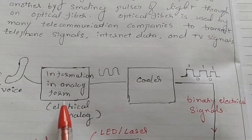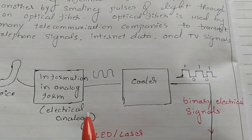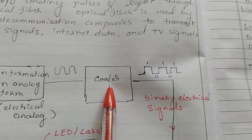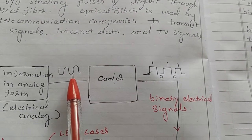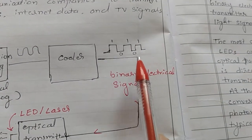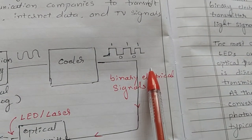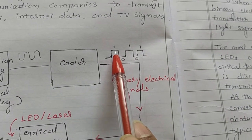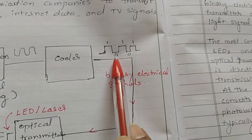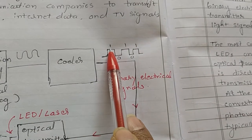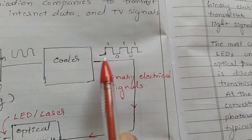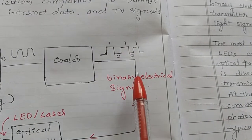The output of the telephone is an analog electrical signal. This analog electrical signal is directly fed to the coder, which converts the analog electrical signal into a binary electrical signal. In a binary electrical signal, only two levels of voltage are present: one and zero. Zero stands for low voltage and one stands for high voltage — all information is converted into binary electrical signal.